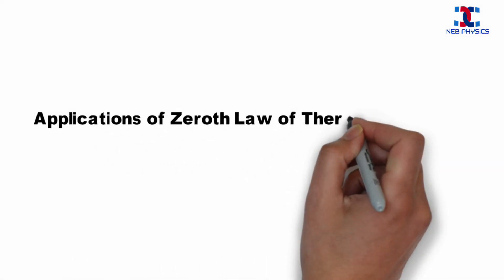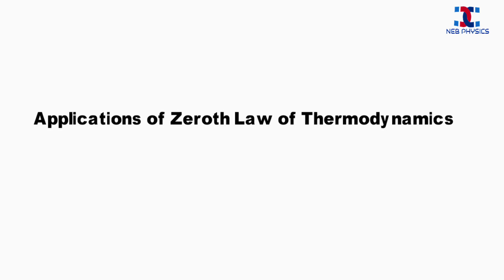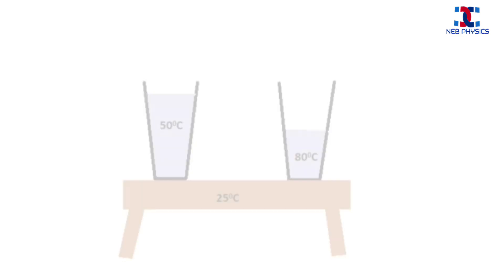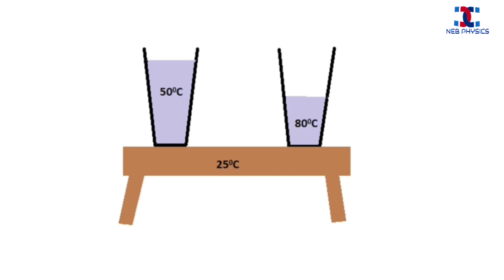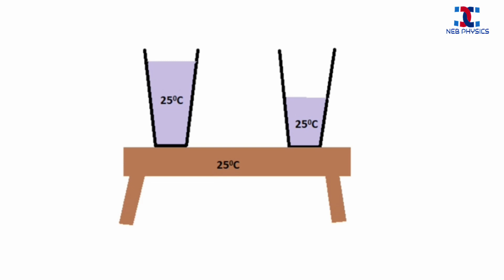Now let's see some applications of the zeroth law of thermodynamics. Suppose the temperature of the surrounding is 25 degrees Celsius. If we keep two glasses of water at different temperatures — for example 50 degrees Celsius and 80 degrees Celsius — on a table for some time, then eventually both glasses come in thermal equilibrium with the surrounding. Finally, we see that the temperature of both glasses and the surrounding is the same.